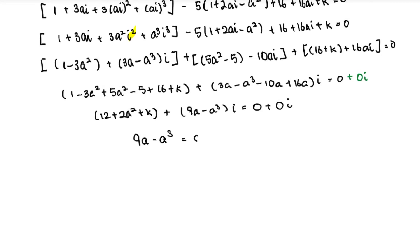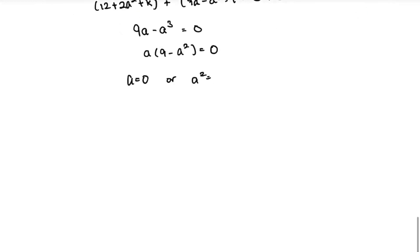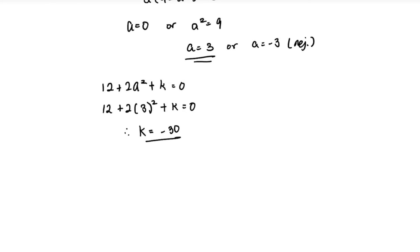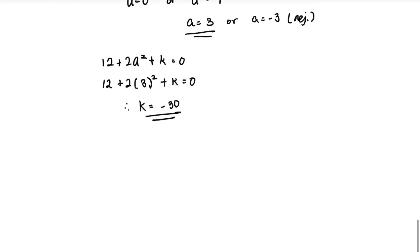From the imaginary part: 9a − a³ = 0, so a(9 − a²) = 0. Therefore a = 0 or a² = 9, giving a = 3 or a = −3. Since a must be a positive real constant, we take a = 3. Substituting into the real part: 12 + 2(9) + k = 0, so k = −30.